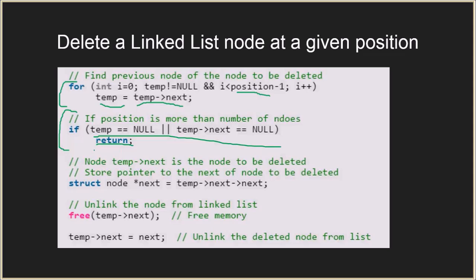Otherwise, we store the pointer to the next of the node to be deleted in a variable called next. This will be used to update the pointer of the previous node. We then free the memory of the node to be deleted, which is the next of temp, and update the next of temp to be next — which is the next node of the deleted node. And the node is deleted.